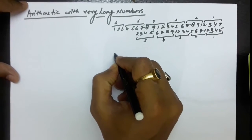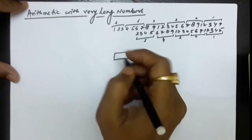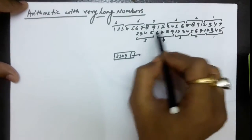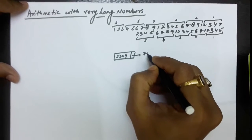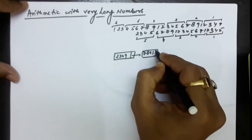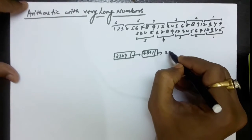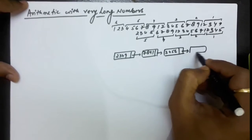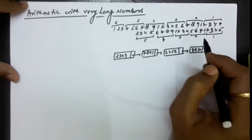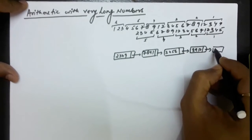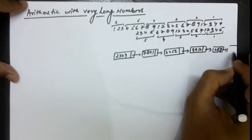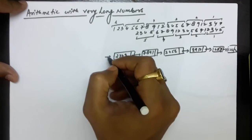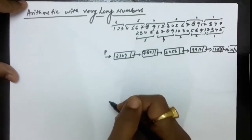So you are going to store these numbers in the form of a linked list. The first linked list has the first group first. So 2349 is the first group, the second group is 7891, the third group is 3456, the next group is 8912, the next group is 4567, and the last group is 123. So this is the first linked list, let's say denoted by P.